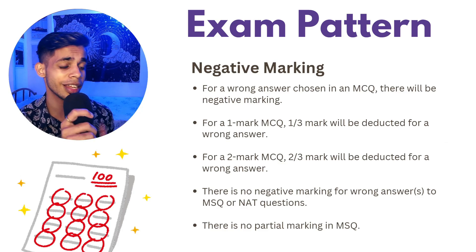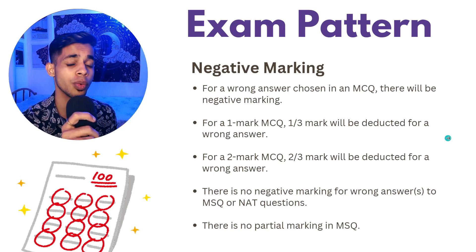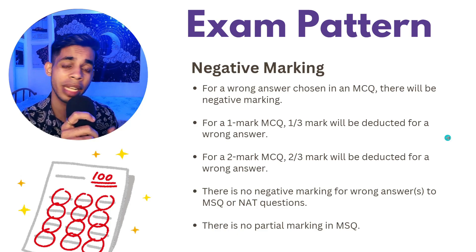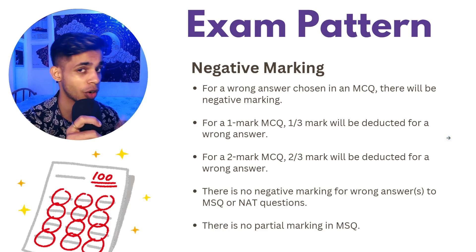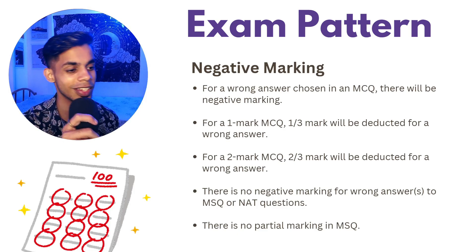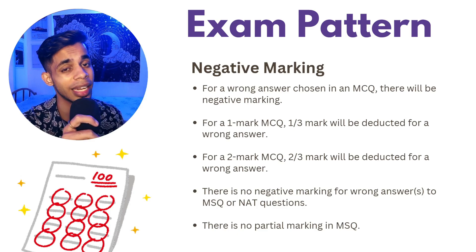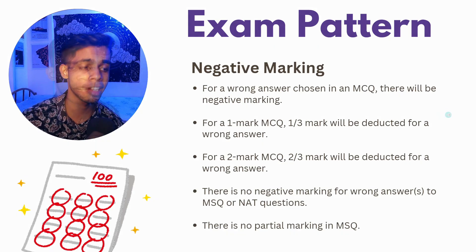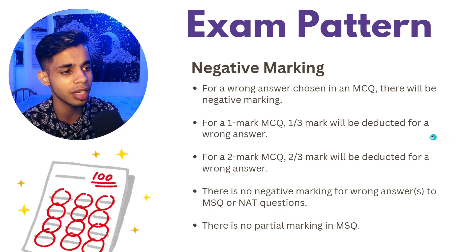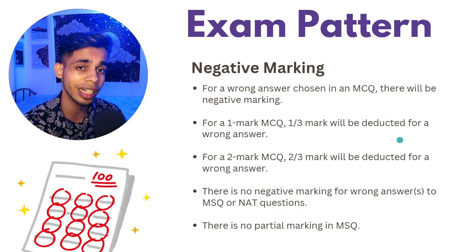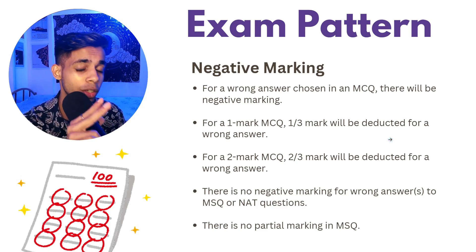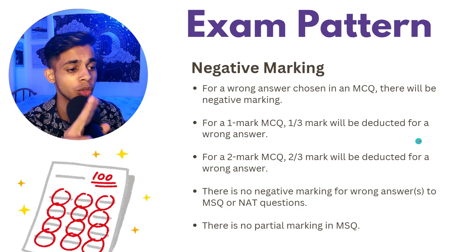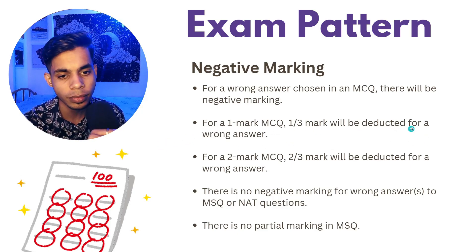There is negative marking, and you need to take it seriously. For a wrong answer in a one-mark MCQ, one-third mark is deducted. For a wrong answer in a two-mark MCQ, two-thirds mark is deducted. Importantly, there is no negative marking for wrong answers to MSQ and NAT questions — Multiple Select Questions and Numerical Answer Type questions carry no penalty.